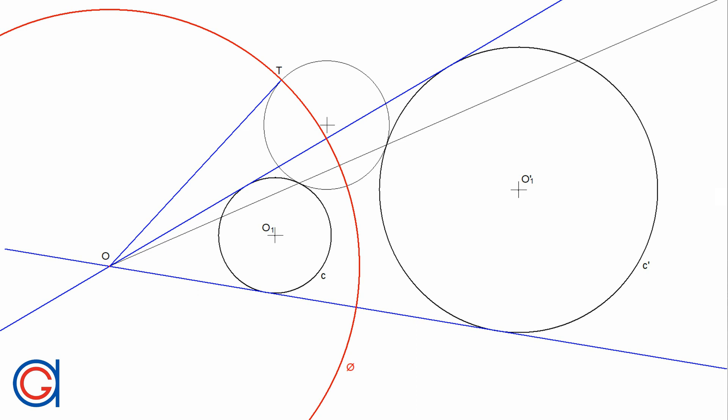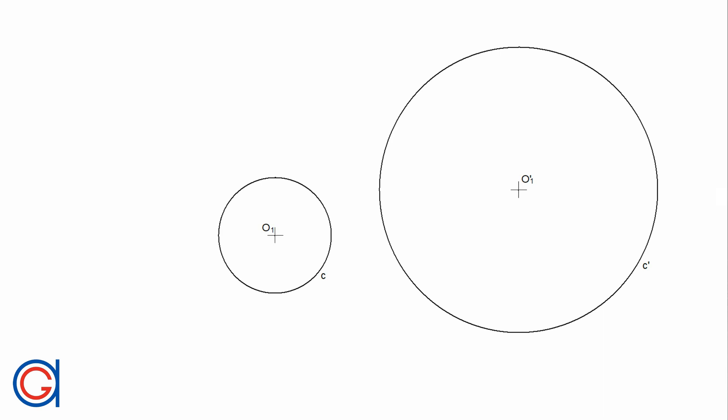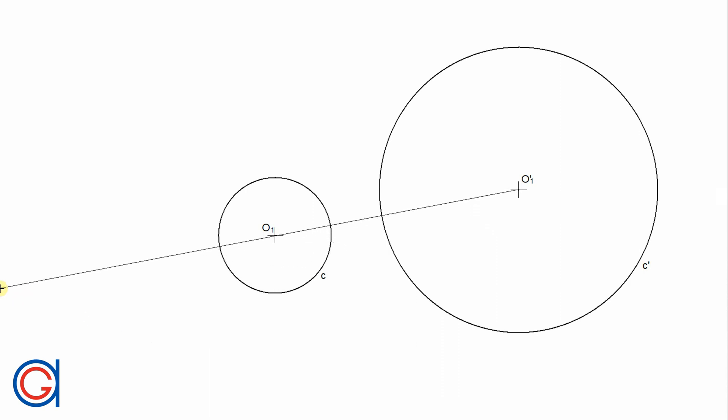Two circles are orthogonal when their tangents at their intersection form a 90-degree angle. Let's start. We have to find the external tangent lines to obtain the center of the mid-circle. To do this, we start by drawing the line R which joins the centers O1 and O1 prime.